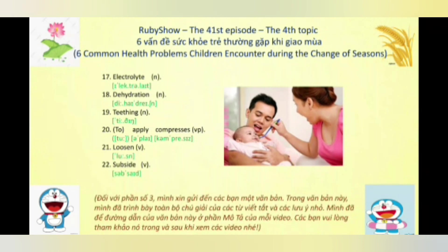Từ số 22, chúng ta có động từ là 'subside,' nhấn âm 2. Động từ này có 6 nghĩa: nghĩa số 1 là rút xuống hoặc rút bớt (thường dùng để nói về nước lụt); nghĩa số 2 là lún xuống (thường dùng để mô tả nền nhà hay sàn nhà); nghĩa số 3 là ngớt hoặc giảm hoặc bớt hoặc lắng đi; nghĩa số 4 là chìm xuống (thường dùng để nói về tàu thủy); nghĩa số 5 là lăng xuống hoặc đóng cặn; và nghĩa số 6 là ngồi phịch xuống (thường dùng để mô tả người).